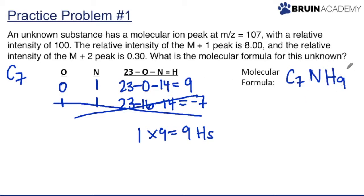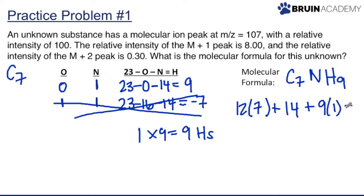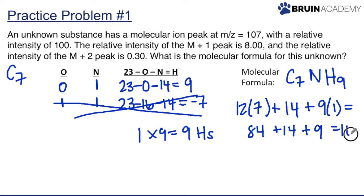This gives us a molecular formula of C7H9N. To verify: 12×7 + 14 + 9×1 = 84 + 14 + 9 = 107. That confirms our molecular formula for the unknown substance.